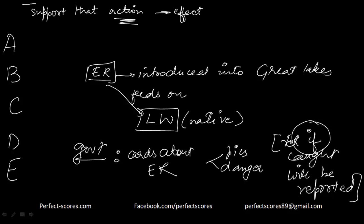So let's go to the options because we need to support that yes, this effect is going to take place. Option A says the ruff has spiny fins that make it unattractive as prey. We are not talking about prey because we are just catching it, we are not eating it right in the lakes, so A is incorrect.